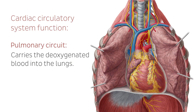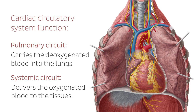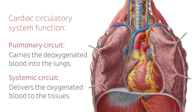The heart then pumps the newly oxygenated blood around the systemic circuit of the body and delivers the oxygenated blood to the tissues, before collecting the deoxygenated blood and sending it back to the heart with unused nutrients and metabolic waste products. These extra substances within the blood filter into the liver for processing.